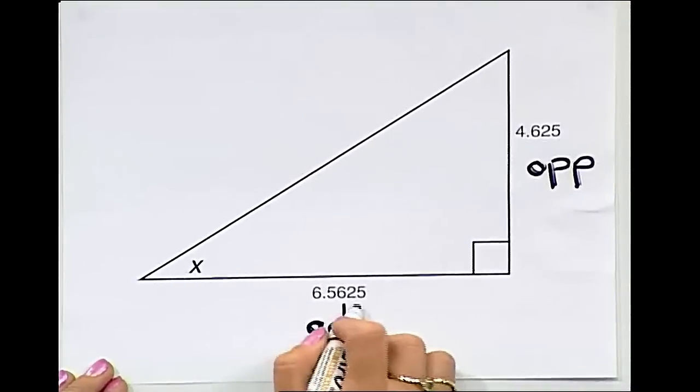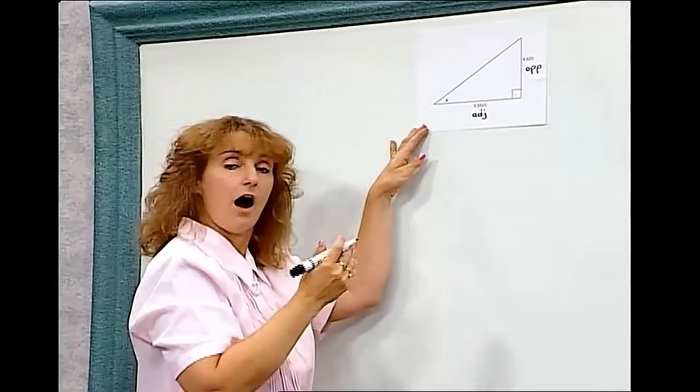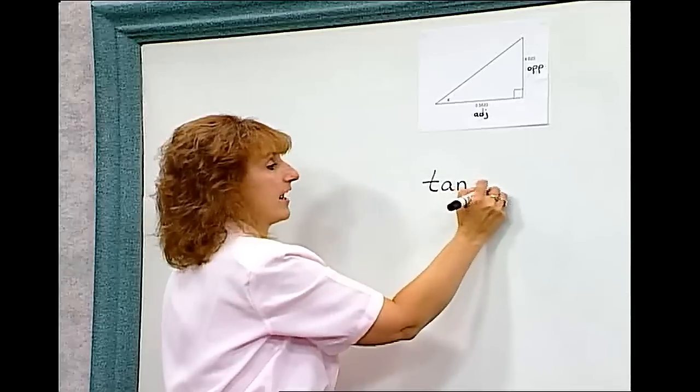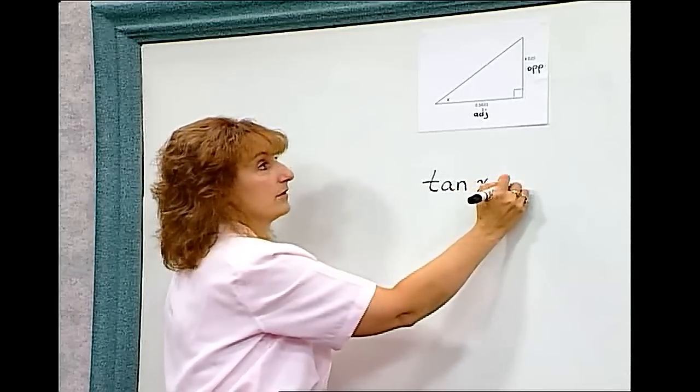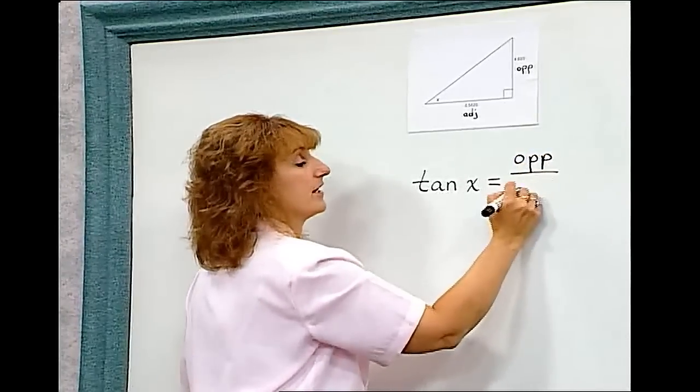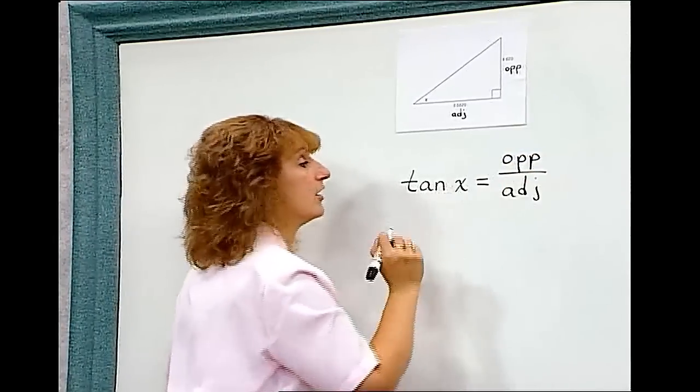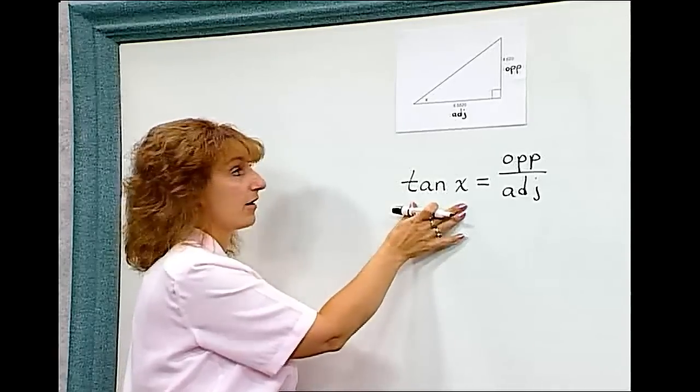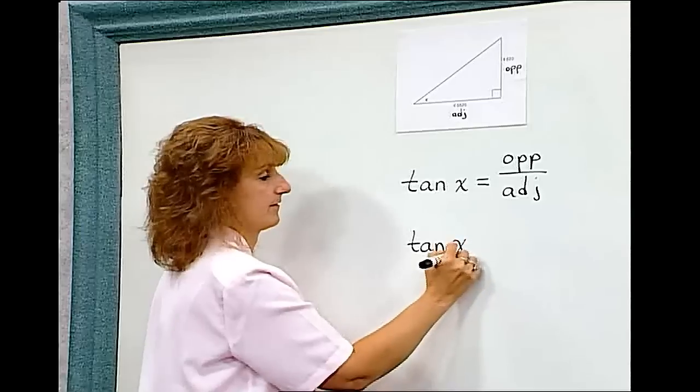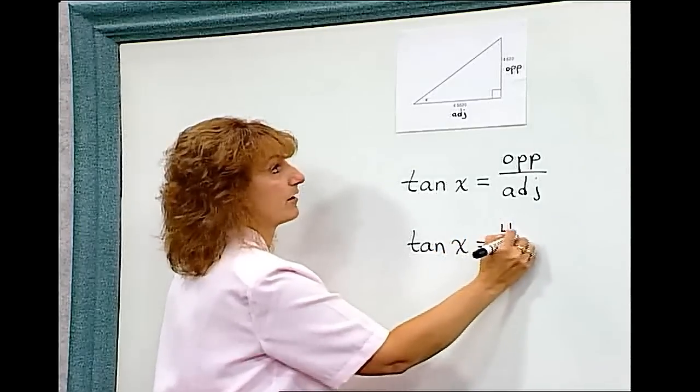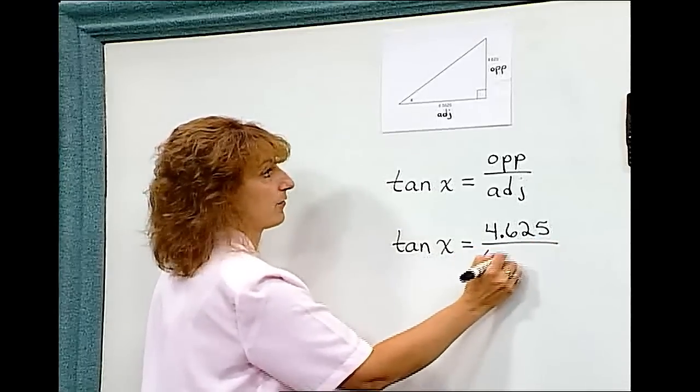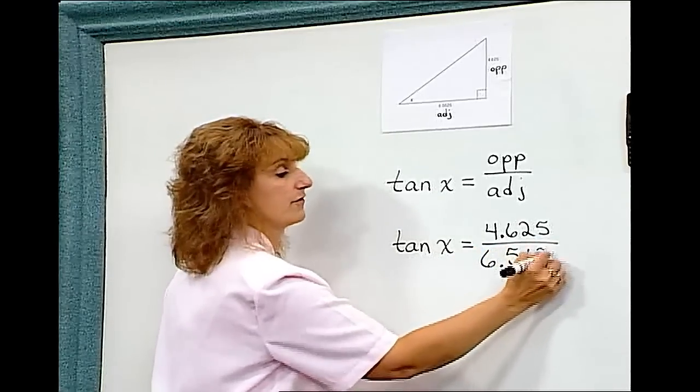I'm going to label it adjacent. I have a ratio that I have memorized: the tangent of an angle is equal to the opposite side over the adjacent side. So if I use this ratio, I can set up the tangent of x equals 4.625 divided by 6.5625.